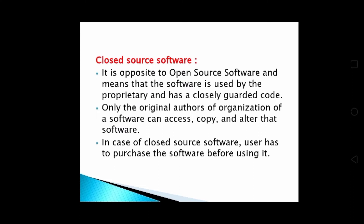The second type is closed source software. It is opposite to open source software and means that the software is used by a proprietary and has a closely guarded code. Only the original authors or organization of a software can access, copy, and alter that software. In closed source software, the user has to purchase the software before using it — it is not freely available.